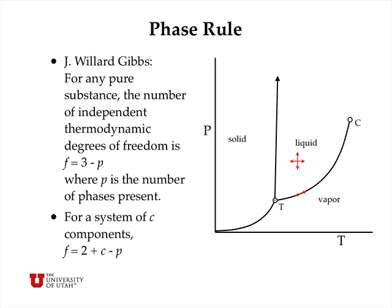Jay Willard Gibbs said that for any pure substance, the number of independent thermodynamic degrees of freedom F is equal to 3 minus P, where P is the number of phases present. So if we have liquid, we can change pressure and temperature independently and stay 100% liquid. If we impose the condition of liquid in equilibrium with vapor, we have to follow along the vaporization curve — if we change temperature, the curve tells us exactly what pressure we need to maintain that equilibrium. There's really only one degree of freedom when we demand two phases present.